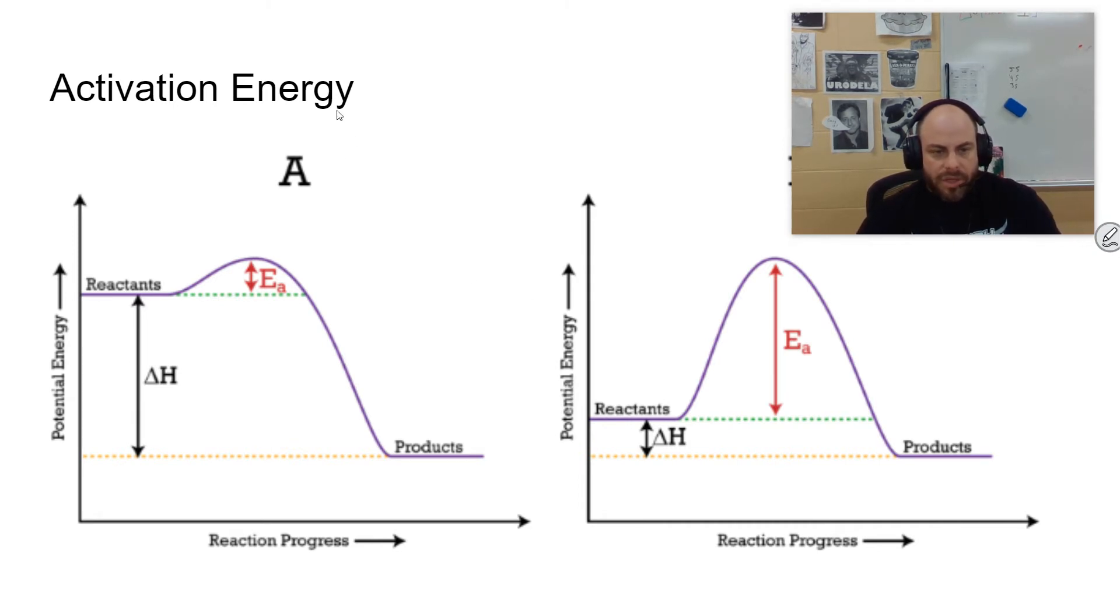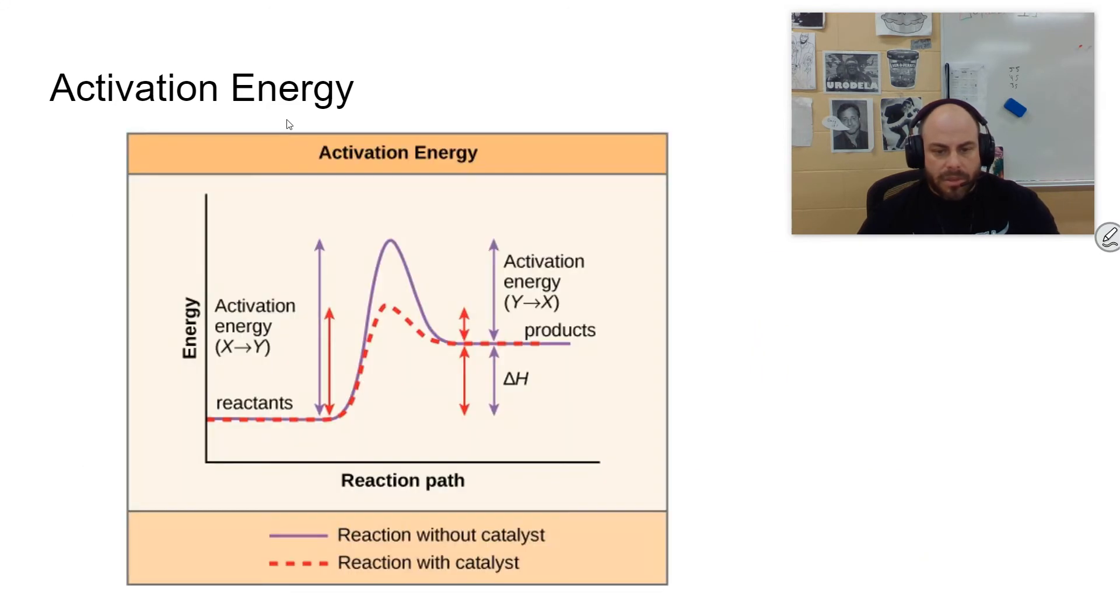There's either going to be a release of energy in a reaction or there's going to be an absorption of energy. Notice here we have the opposite thing happening. Sometimes you'll see reaction path, it's all kind of the same thing. This is time from getting from reactants to products, and this is energy. Notice you have less energy at the beginning of the reaction than you do at the end, so we would say that energy is being absorbed in this particular reaction. Here you have a very high energy of activation necessary to begin this reaction.